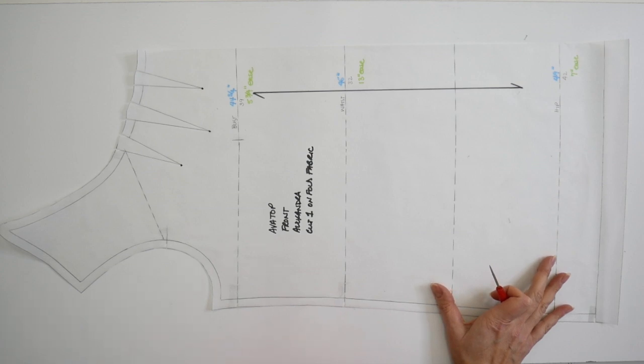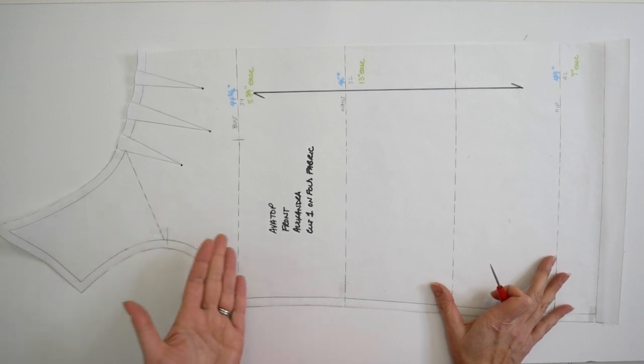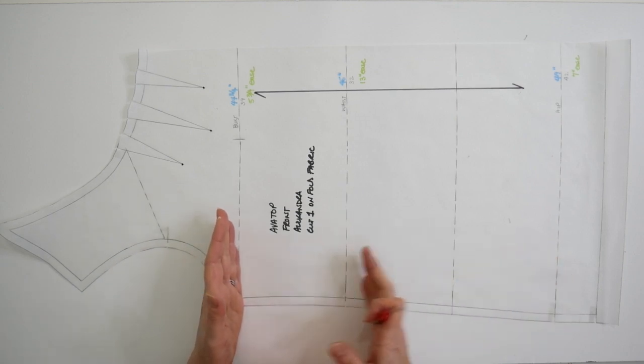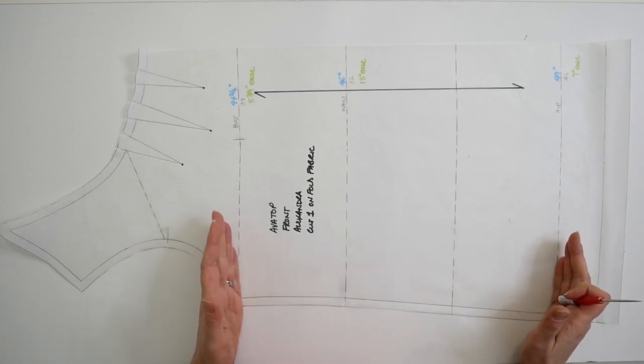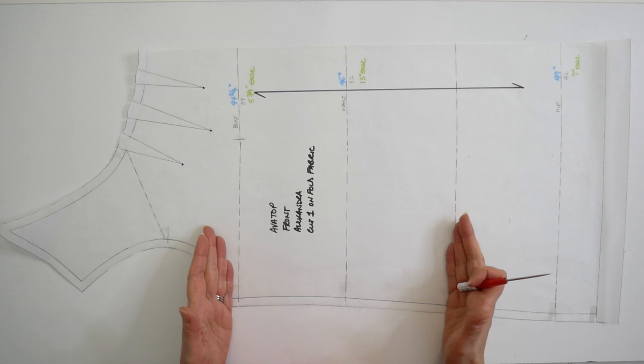Now I want you to notice here that what I've done for labeling is made sure that I have my bust, waist and hip line on the pattern. I also have my high hip area here too.